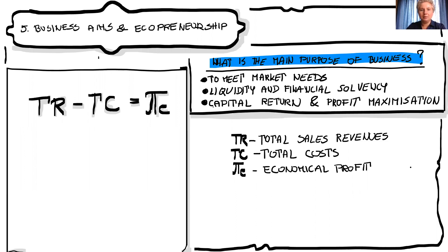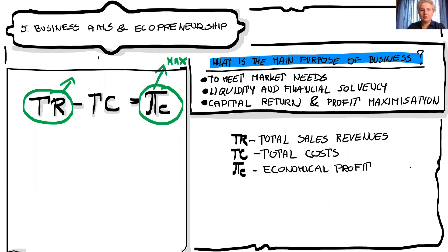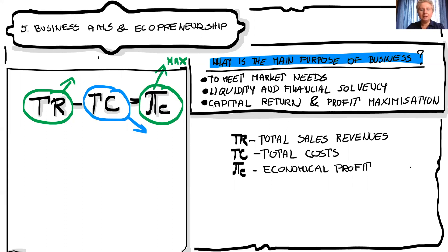To maximize profit, what can we do? The aim could be the maximization of sales revenue with the same costs, or a minimization of total costs with the same revenue, or both. The highest profit would be when the business is able to increase sales revenue and decrease costs at the same time.